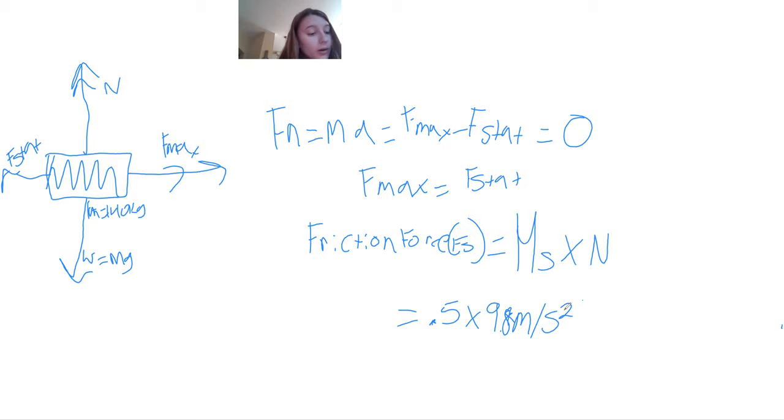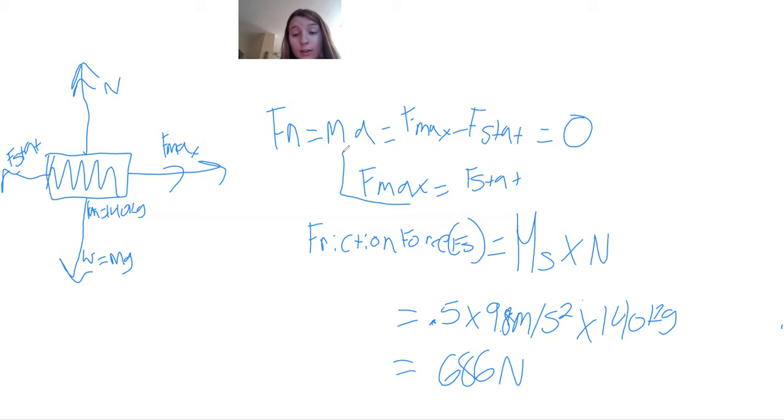And that is equal to 686 Newtons. Now do not forget that according to this, our F stat, which is what this is, is also equal to our F max. So both of our F max and our F static are both equal to 686 Newtons.